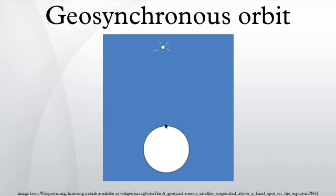Over the course of a day, the object's position in the sky traces out a path, typically in the form of an analemma, whose precise characteristics depend on the orbit's inclination and eccentricity.